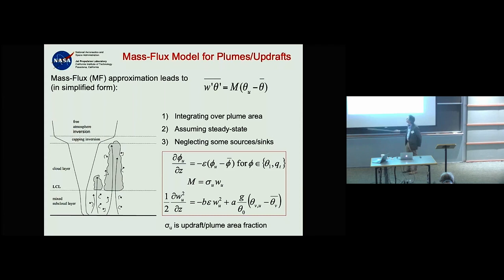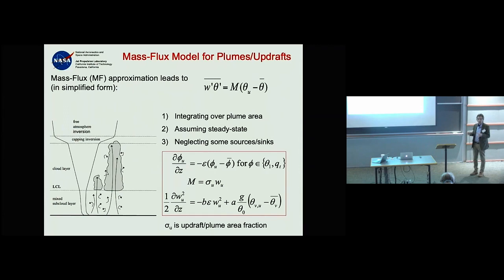An approach we've followed over the last 10 years involves multiple plumes in a particular grid box. We first sample surface-layer properties — thermodynamic variables and vertical velocity. If a particular plume is already energetic near the surface, it tends to go further.